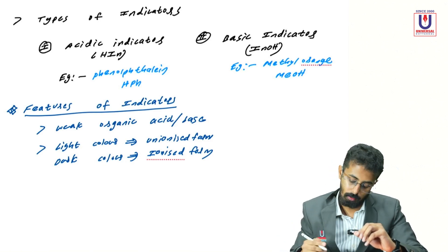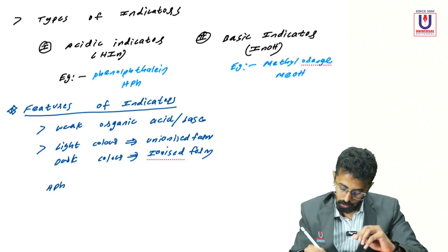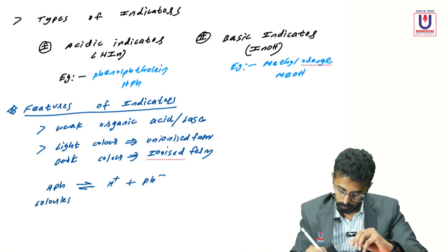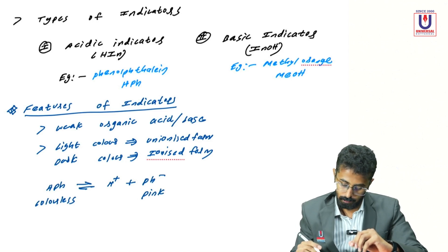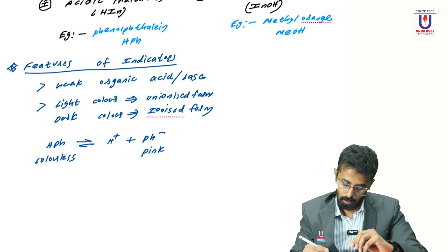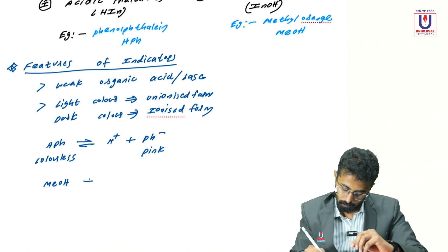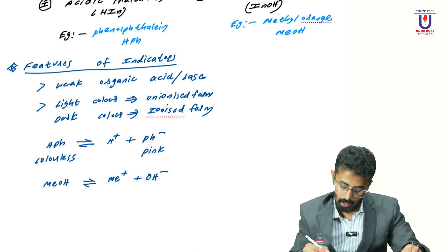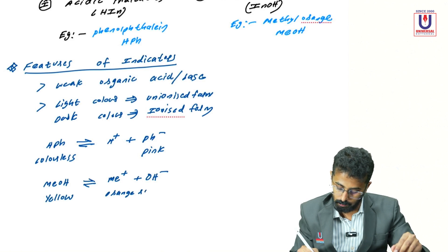For the acidic indicator phenolphthalein, HpH dissociates to give H⁺ plus pH⁻. The HpH species is colorless, and the pH⁻ species is pink in color. For methyl orange, MeOH dissociates to give Me⁺ and OH⁻. MeOH has a yellow color and Me⁺ has an orange-red color.